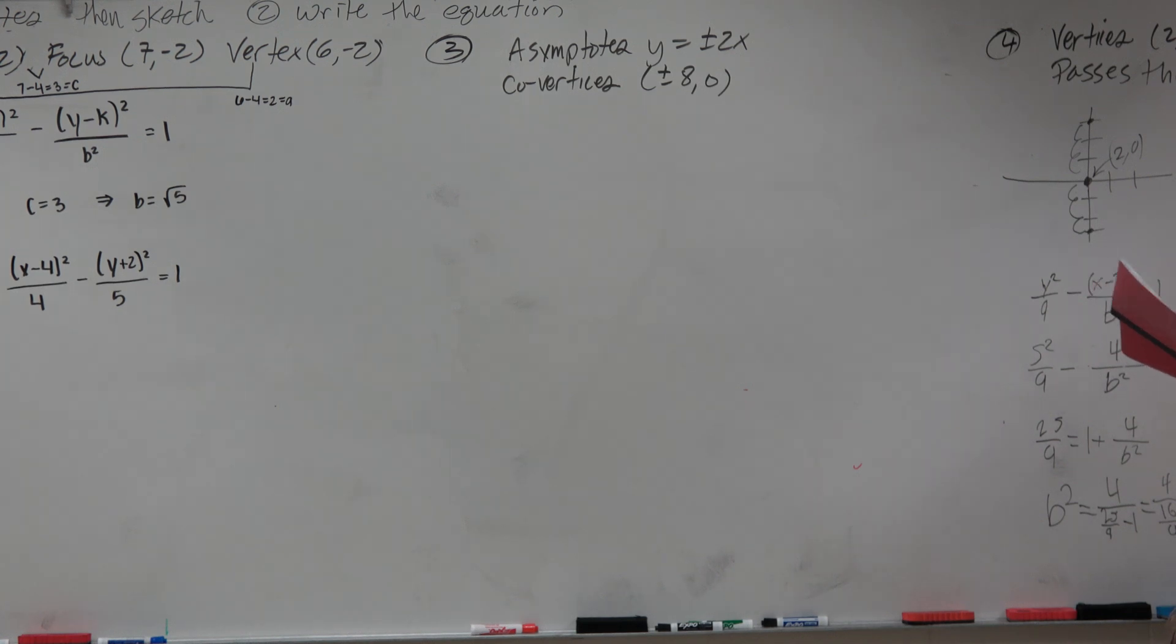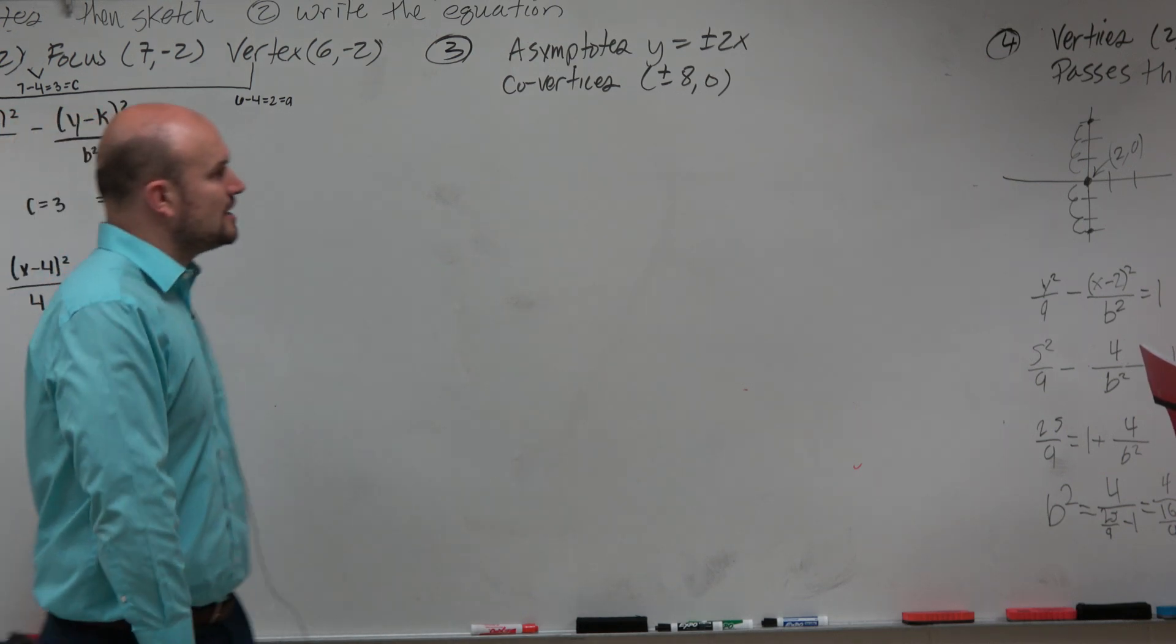In this example, the asymptote is y equals 2x, and my covertices are plus or minus 8.